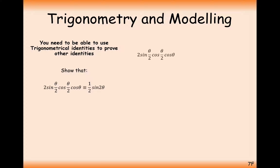We're going to start with the left-hand side: we've got 2sin(θ/2)cos(θ/2) times cosθ. We're not used to dealing with these sin(θ/2) and cos(θ/2) terms, but if you look at this part here, it roughly does look like the sin double angle rule, just with a different angle.